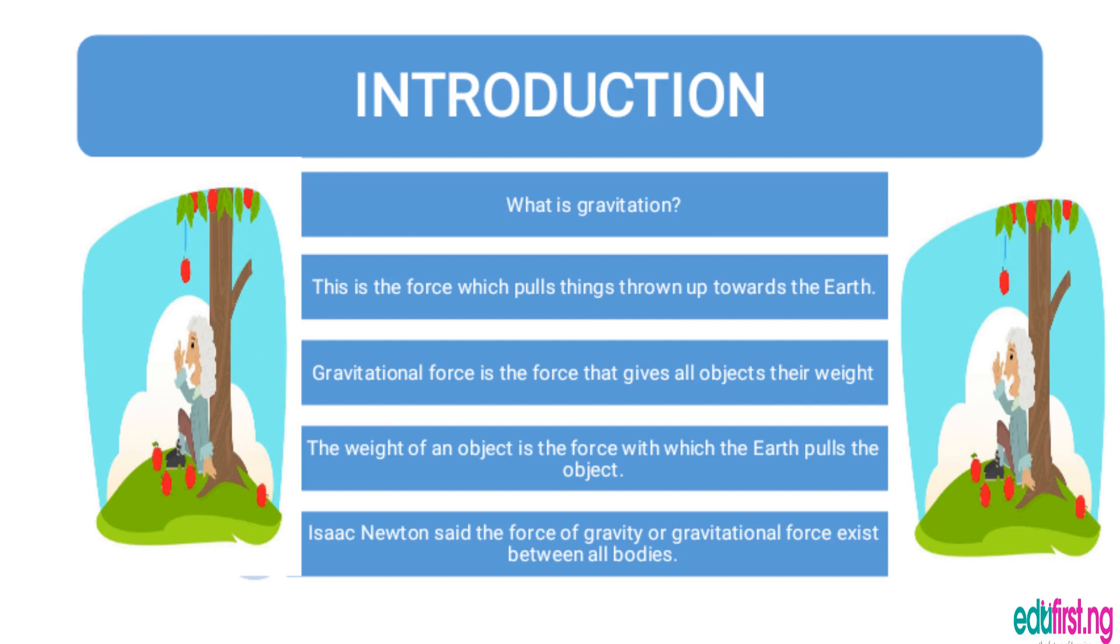There was a force responsible for such an action, and that force was the force of gravity. So what is gravitation? Gravitation is the force which pulls things thrown up towards the earth. When you throw a stone upward, why doesn't the stone continue to go up? After some time, you see that the stone starts to fall down. What is the mystery behind that, and that's what we are talking about today.